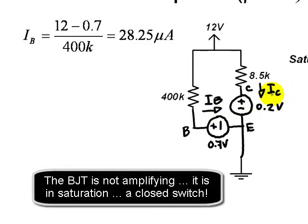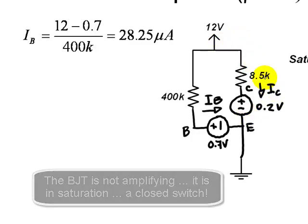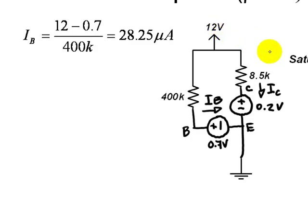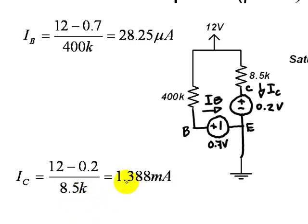So the current in the collector will be just the current in an RV branch: the voltage of the origin, 12, minus the voltage of the destination, 0V, minus the source in the branch, 0.2, divided by 8.5kΩ. That current is 1.39mA.